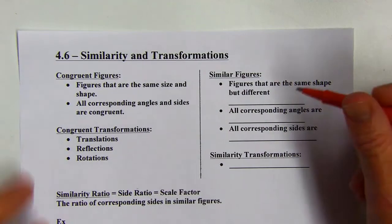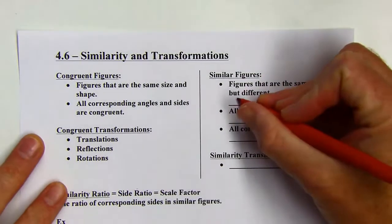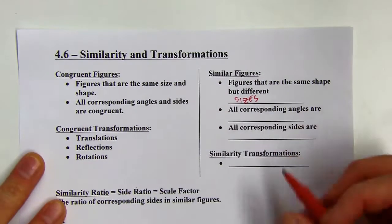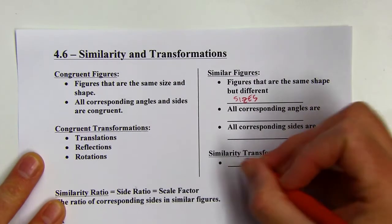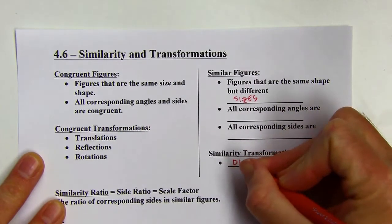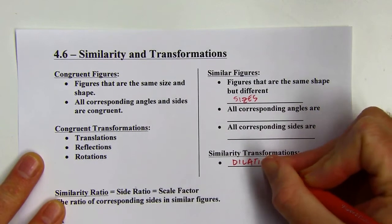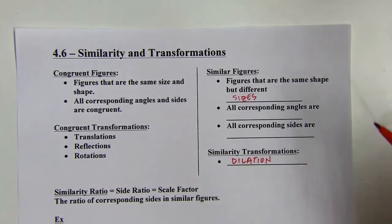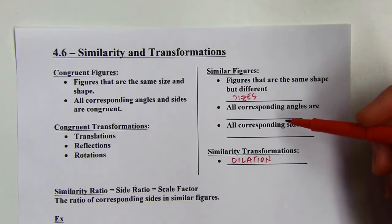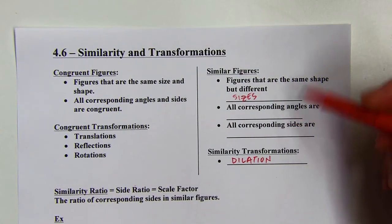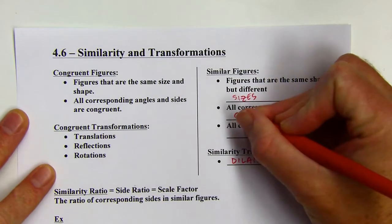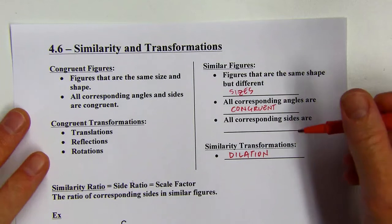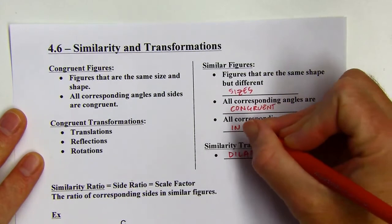Similar figures are figures that are the same shape but different sizes. The only transformation that changes the size is a dilation, where we're either enlarging or reducing. For example, a little equilateral triangle and a big one are going to be similar — same shape, different sizes. The angles are going to be congruent, but the sides are not congruent.